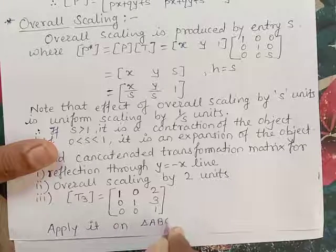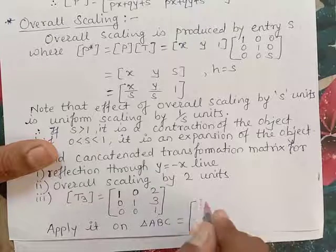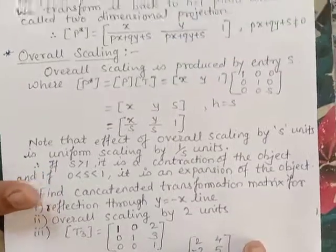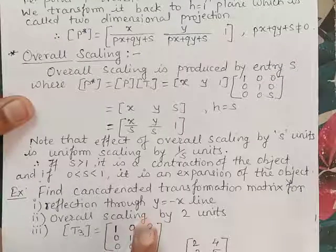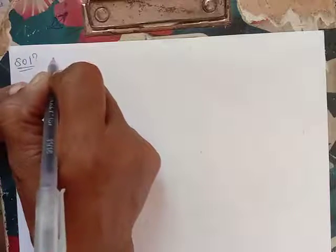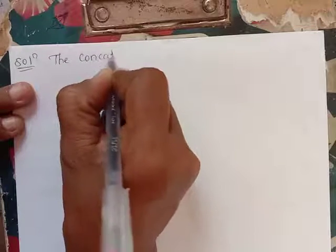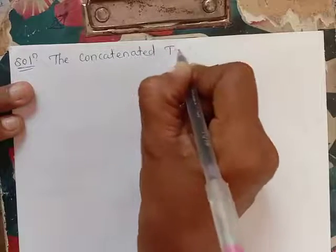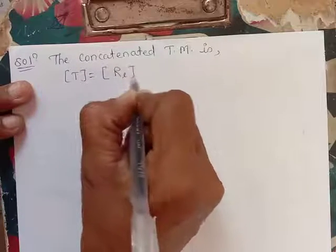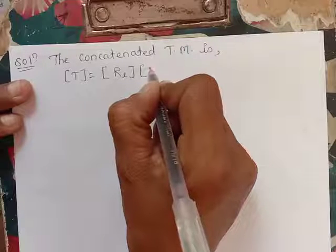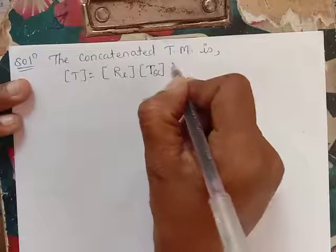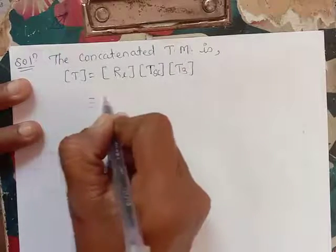Triangle ABC has position vector matrix [2,4,1; −2,5,1; −1,−1,1]. Let's solve this. First we will find the concatenated transformation matrix and then apply it. The concatenated transformation matrix T equals first reflection, then overall scaling.